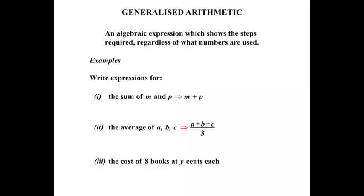Example 3, the cost of eight books at Y cents each. Well if we have eight books and they're each costing Y, then our total cost will be eight lots of Y. Eight Y.